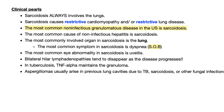Clinical pearls: Sarcoidosis always involves the lung — if it's not in the lung, it's not sarcoidosis. It causes restrictive cardiomyopathy and restrictive lung disease. It's the most common non-infectious granulomatous disease in the United States, and the most common cause of non-infectious hepatitis in the US. The most commonly involved organ is the lung, and the most common symptom is shortness of breath — not cough, not hemoptysis, not sputum — just dyspnea.